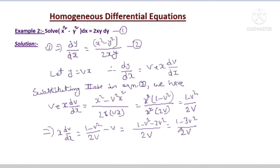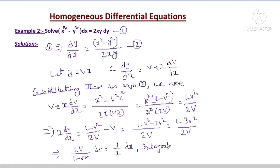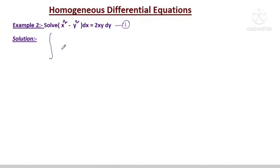Now we can apply variable separable here. This implies 2v / (1 - 3v²) dv = (1/x) dx. Now integrating on both sides, we have: integral of 2v / (1 - 3v²) dv = integral of (1/x) dx.